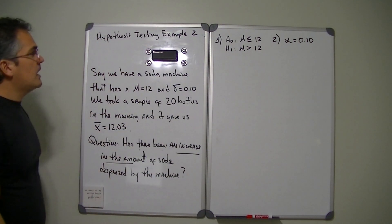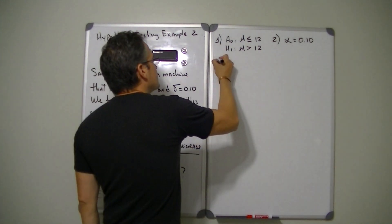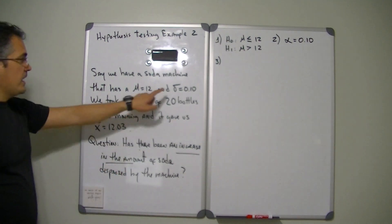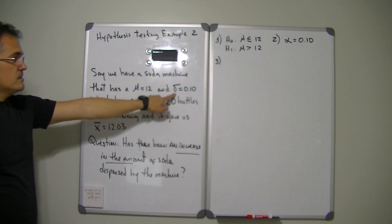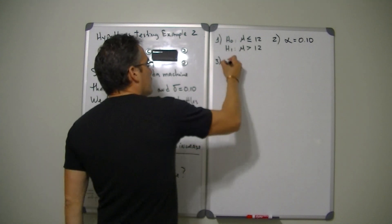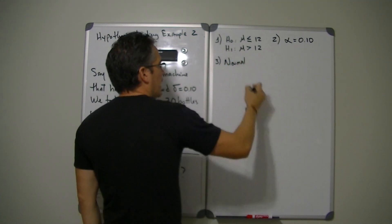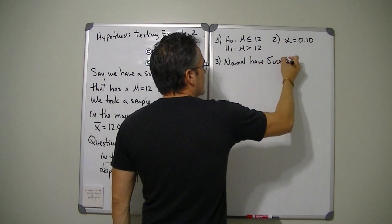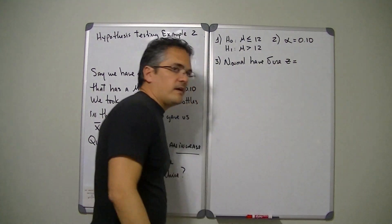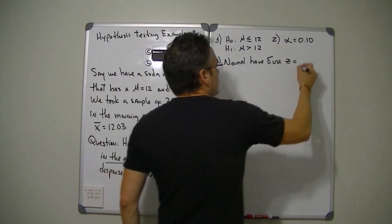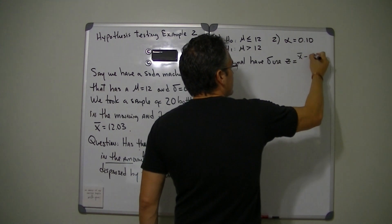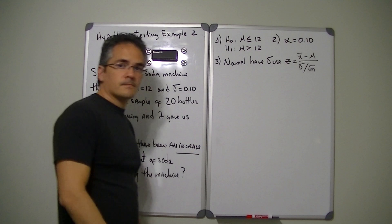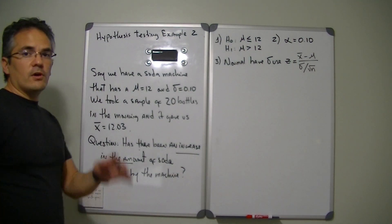All right, for step number three we need to determine which test we're going to be conducting. Now in this particular case we are given the population standard deviation so we're going to assume normality and we have our sigma, so we're going to use our z test. So to find our z we need to use x bar minus mu over sigma divided by square root of n.